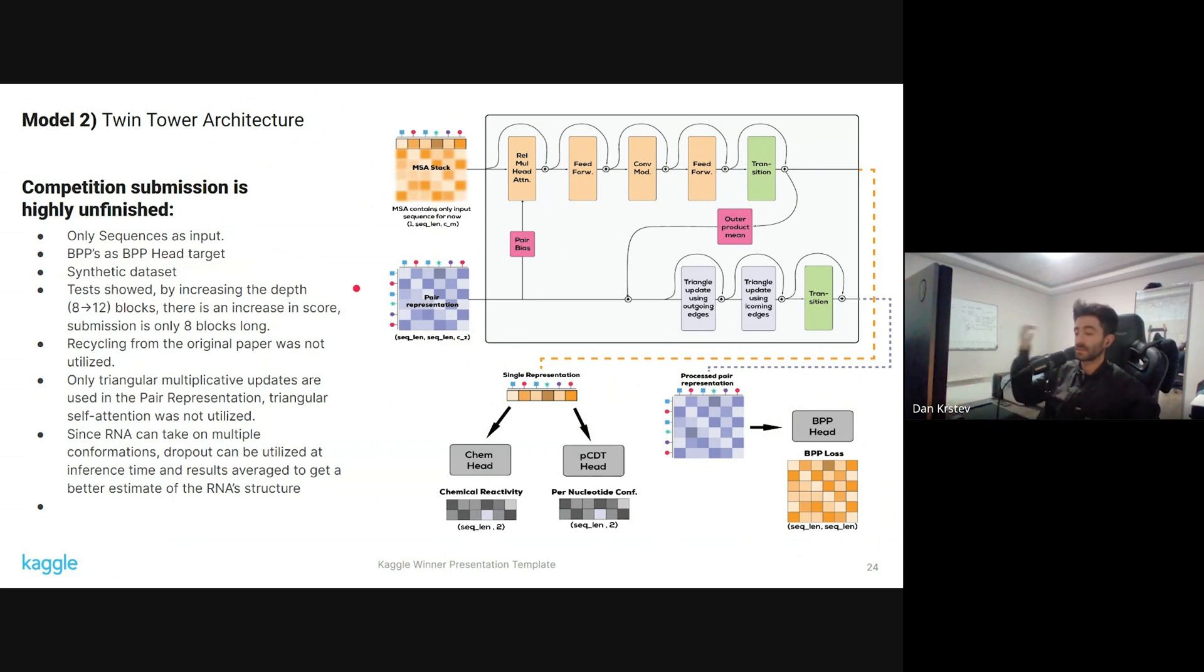Some early tests showed that the increase in depth, so from 8 to 12 blocks, increased the score. However, I should say that this model suffers from, I mean it doesn't suffer, but the training time is longer than the Squeezeformer. So increasing the blocks will further increase the training time. Also, recycling was not used that was implemented in the original paper. This is a part that can be improved. Because of memory problems, only triangular multiplicative updates are used. The triangular self-attention, as we can see, is omitted. And another thing that can be improved, and it's an interesting finding, is that since RNA can take on multiple conformations, dropout we can use dropout during inference time.